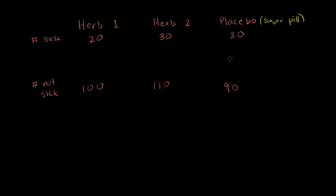So over here we have a table, and this is actually called a contingency table. It has on it, in each group, the number that got sick and the number that didn't get sick. And from this we can also calculate the total number.